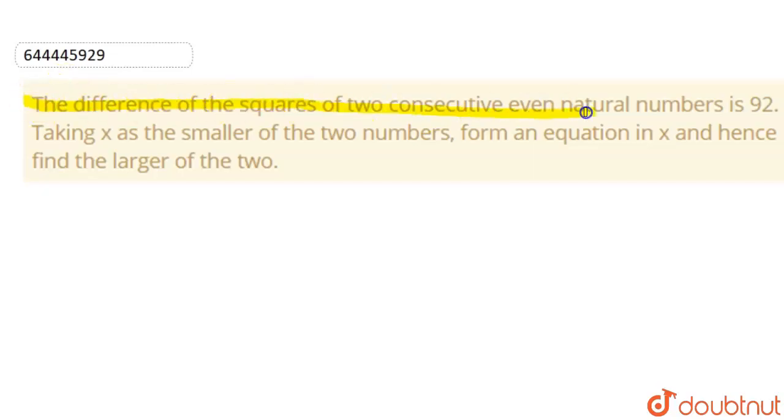Today our question is: the difference of the squares of two consecutive even natural numbers is 92. Taking x as the smaller of the two numbers, form an equation in x and hence find the larger of the two.